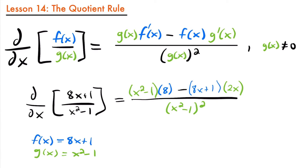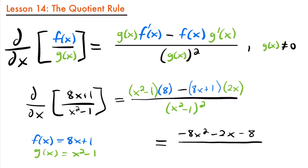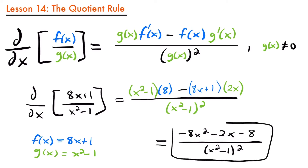If you wanted a nicer form, you could distribute the 8 through and the 2x through each part of the quantity. The simplified answer would be negative 8x squared minus 2x minus 8, all divided by x squared minus 1, quantity squared.